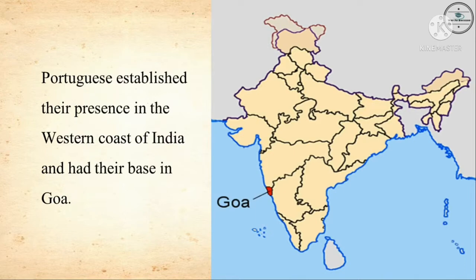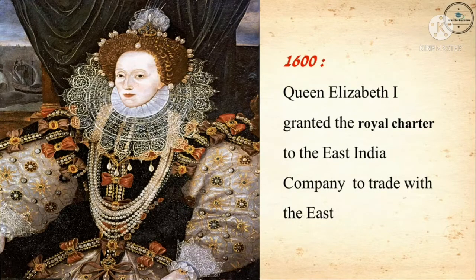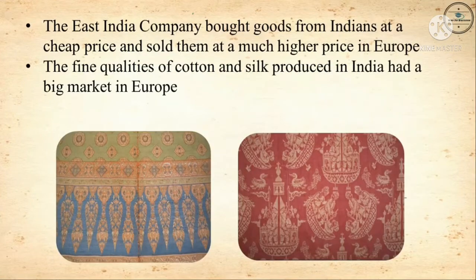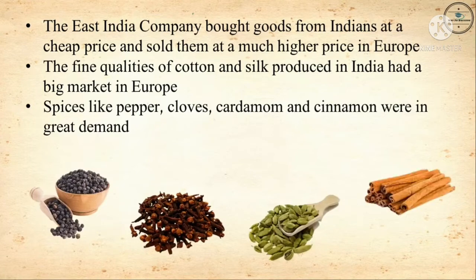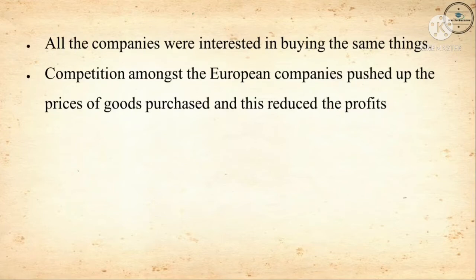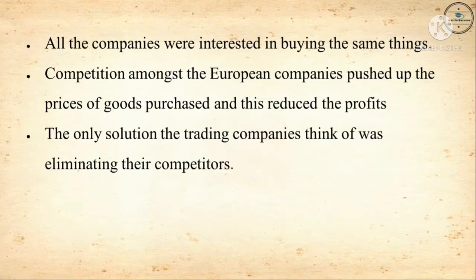The Portuguese established their presence on the western coast of India and had their base in Goa. In 1600, Queen Elizabeth I granted the Royal Charter to the East India Company to trade with the East. The East India Company bought goods from Indians at a cheap price and sold them at a much higher price in Europe. The fine qualities of cotton and silk produced in India had a big market in Europe. Spices like pepper, cloves, cardamom, and cinnamon were in great demand. All companies were interested in buying the same things, and competition among the European companies pushed up the prices of goods and reduced profits. The only solution the trading companies thought of was eliminating their competitors.